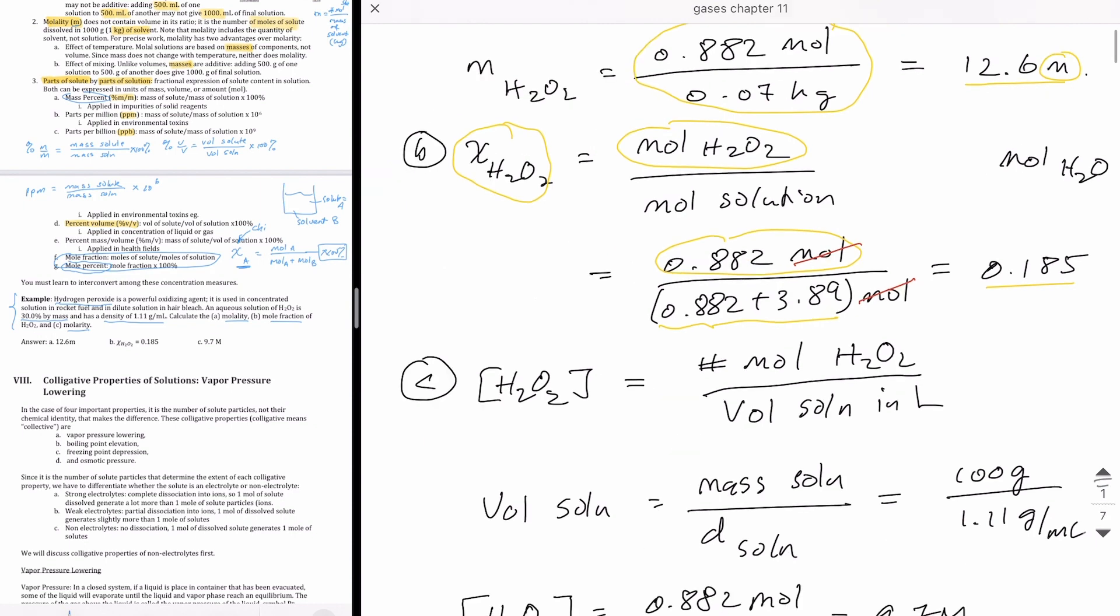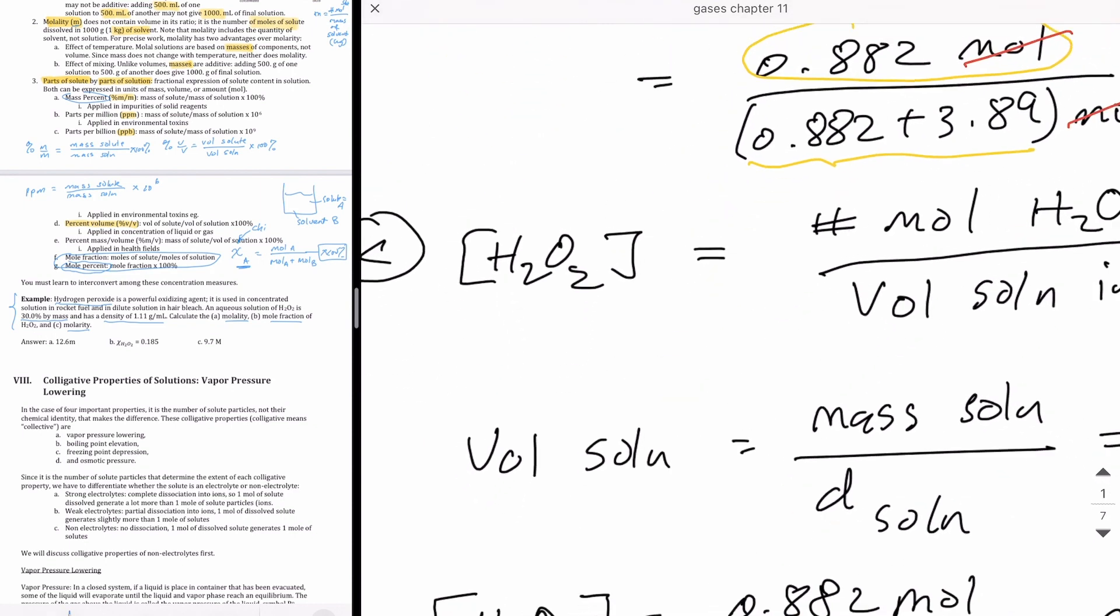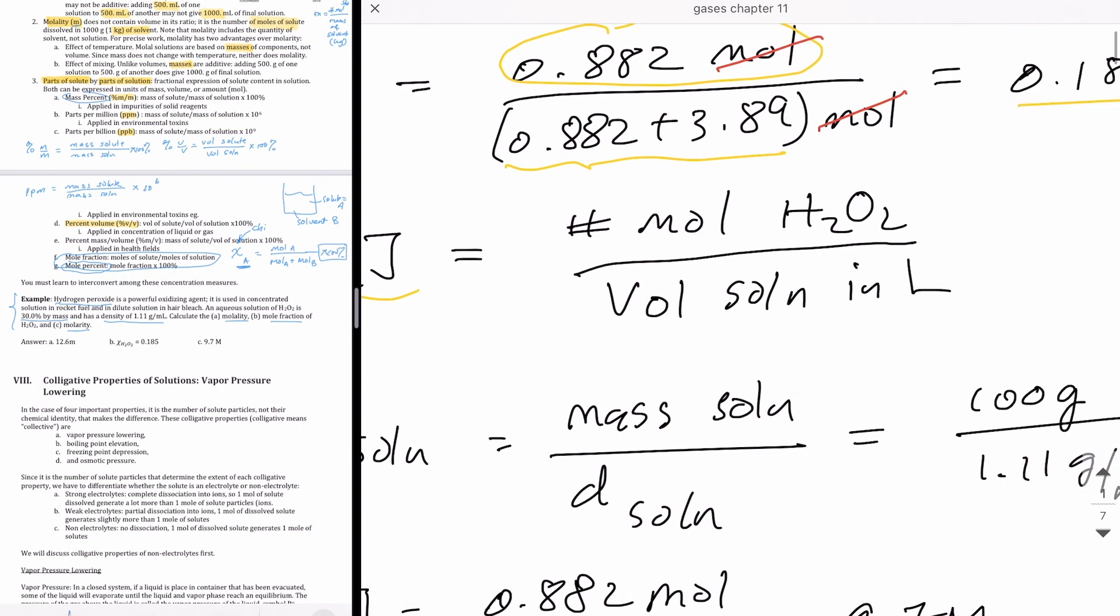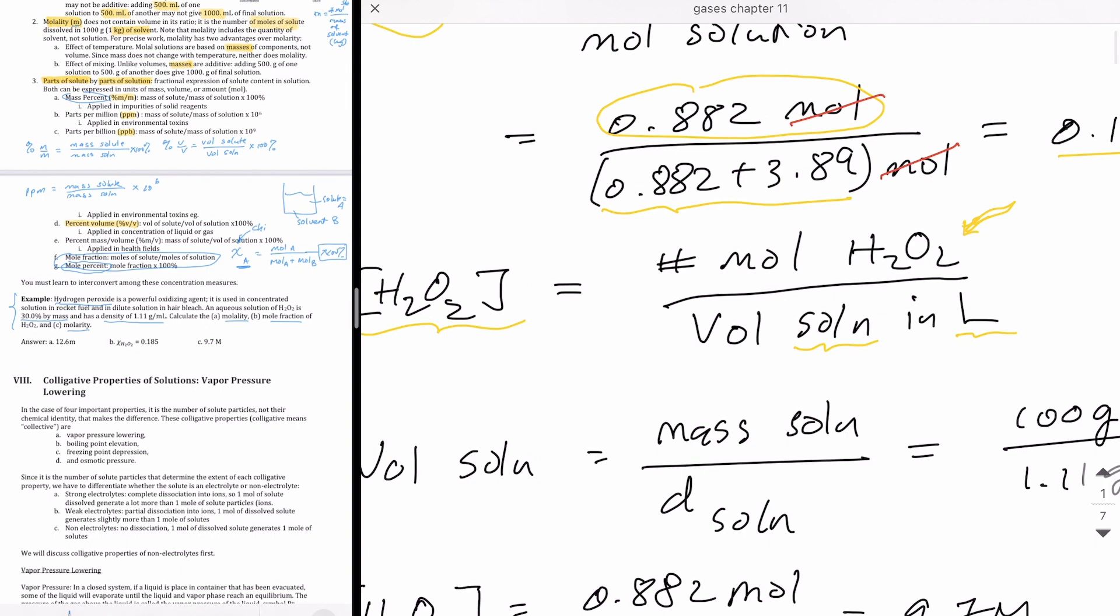The last number we were asked to calculate is the molarity, which is this here. And that's, of course, is number of moles of the H2O2 divided by the volume of the solution. Now, in case we want the entire thing as volume in liters.